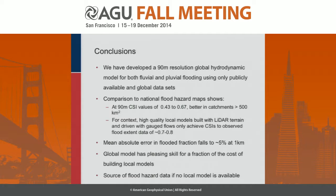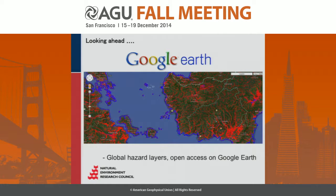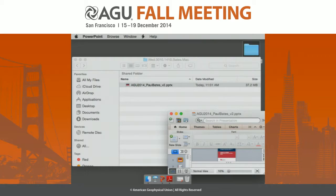Overall, I would say it's pleasing skill for a fraction of the cost of building a bespoke local model. So if you don't have local data available — for example, if you're in Afghanistan or a developing country — this might be a good place to go for that kind of information. And for the future, we've got a project with Google and the Natural Environment Research Council in the UK to make global hazard layers open access on Google Earth. Guy Schumann and I will be talking about that tomorrow morning at 10 o'clock at the Google stand in the exhibition area. Thank you very much.